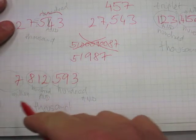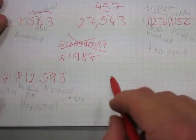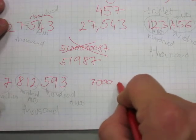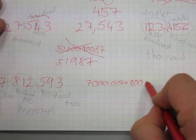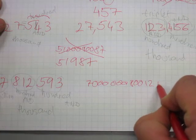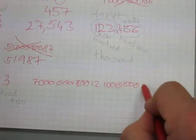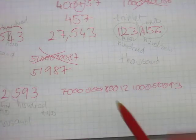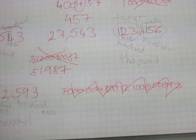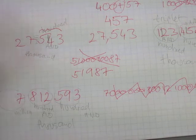If you tried to write down every single word you hear, it would be extremely long and also incorrect. Don't write out 'seven million, eight hundred and twelve thousand, five hundred and ninety-three' as separate written words — that's wrong. Instead, write the digits: 7,812,593. That's how numbers are correctly written down.